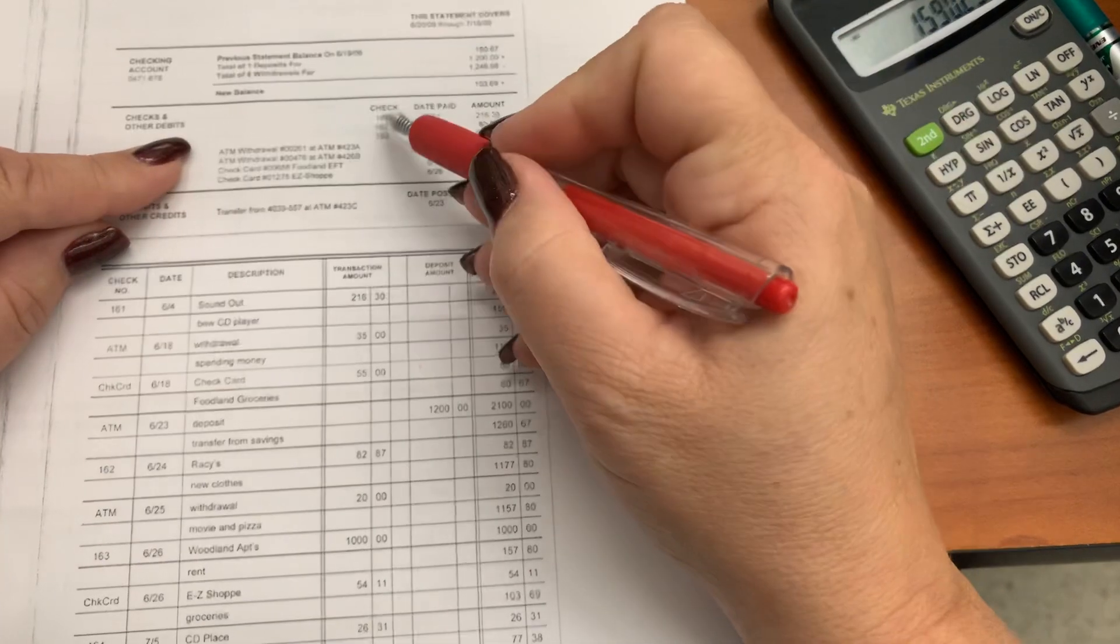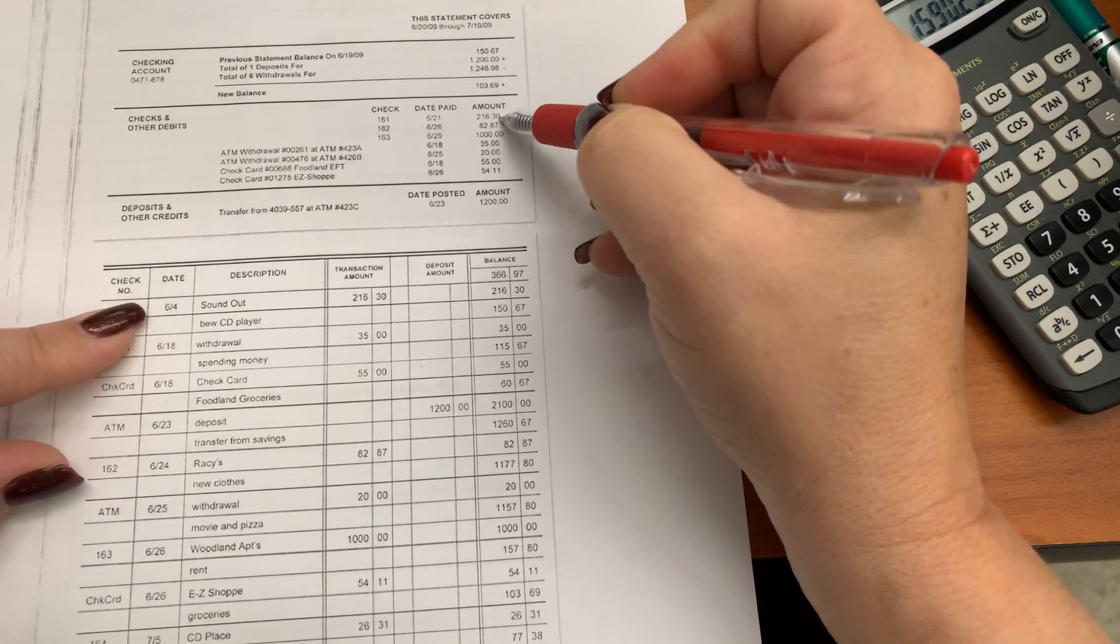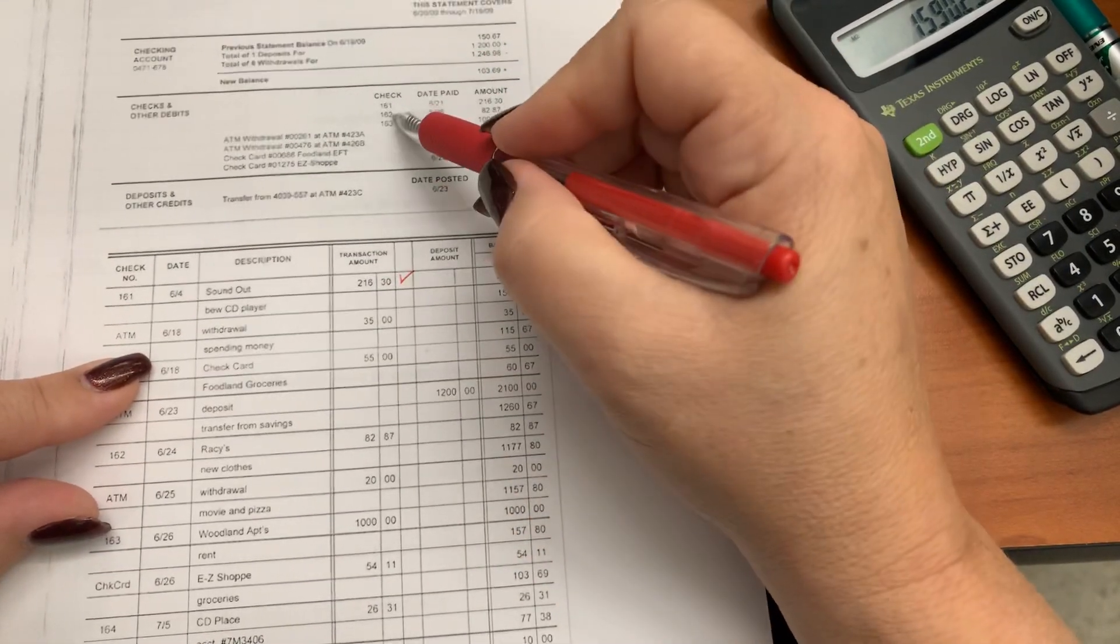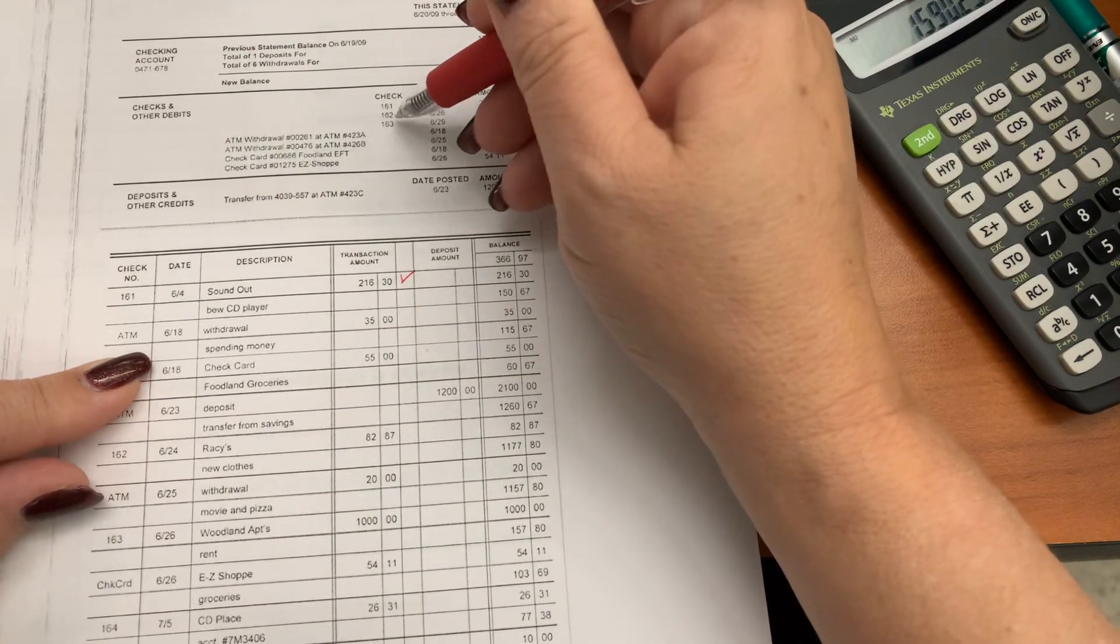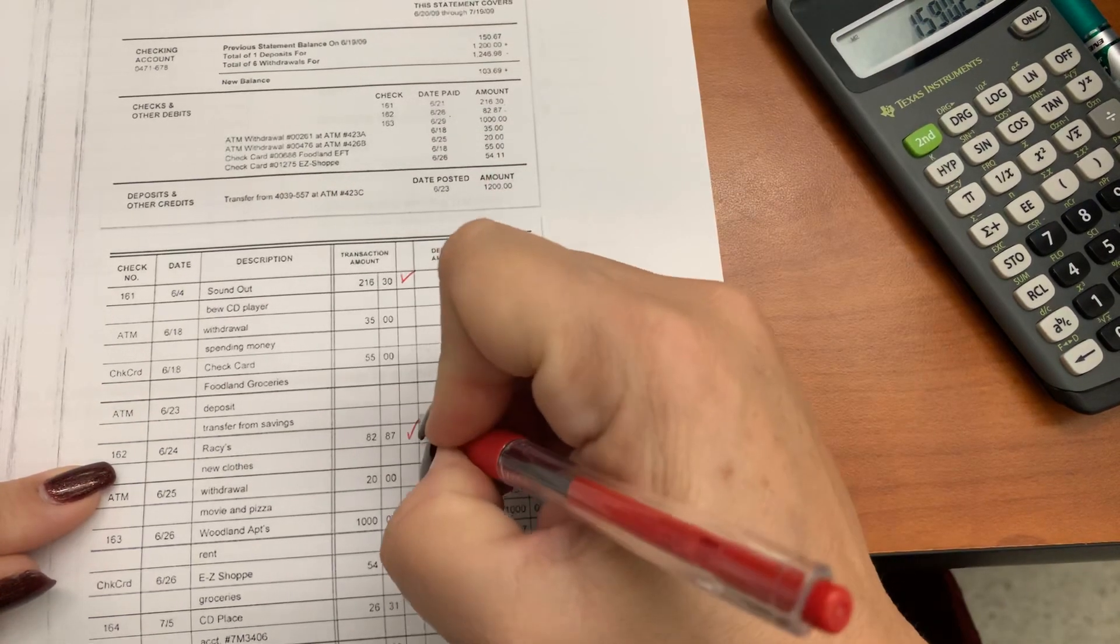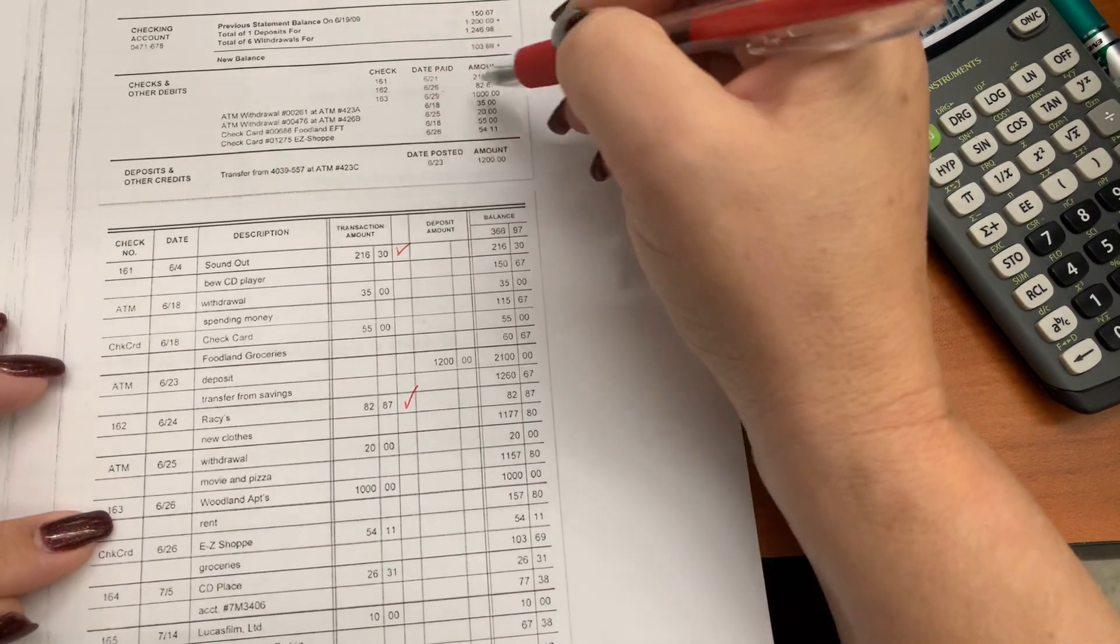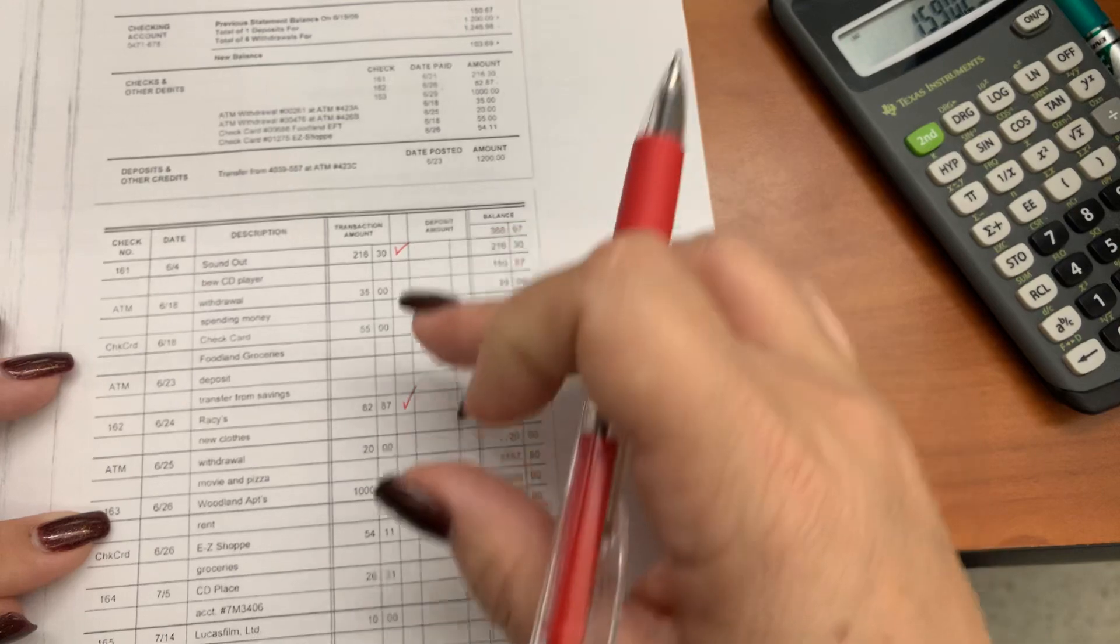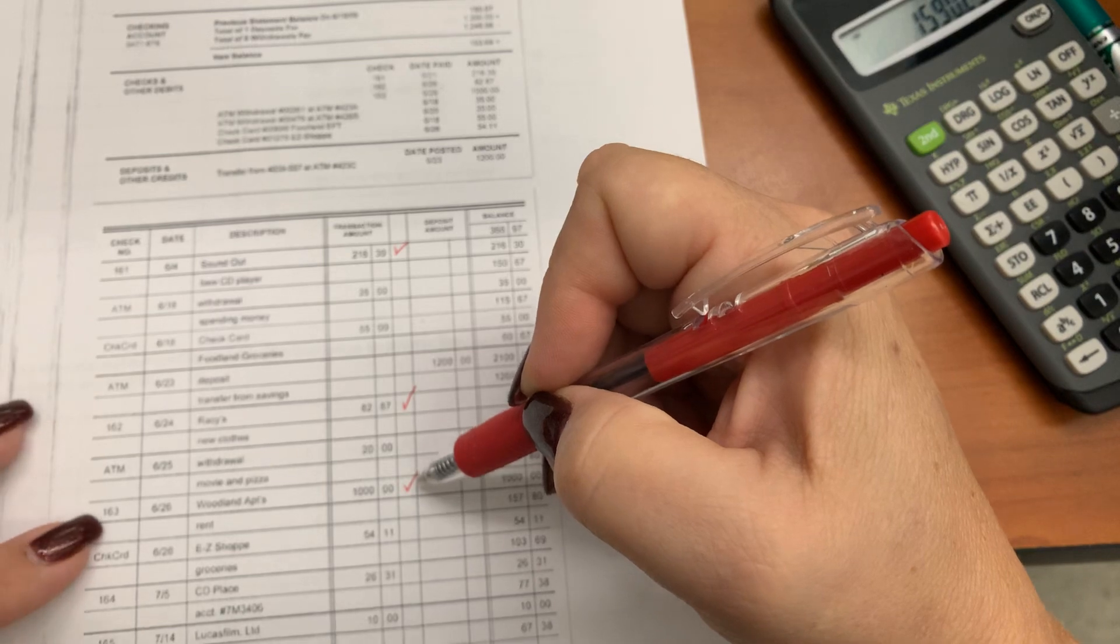So notice that I have check 161 right here. It is $216.30. Then I had check number 162. It's easier to follow this than this. That way you don't miss anything. 162 is right here. It was for $82.87. That is correct. Then I have check number 163, which is right here. It was $1,000. That is correct. If there was an error on something here, you need to check that you wrote your check correctly and that the bank recorded it correctly. Then you have to go in and file some paperwork with them.